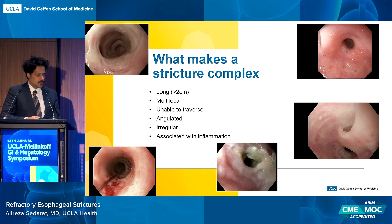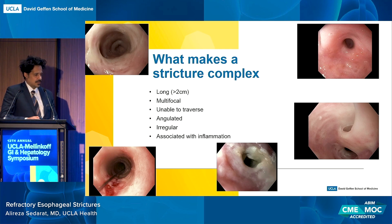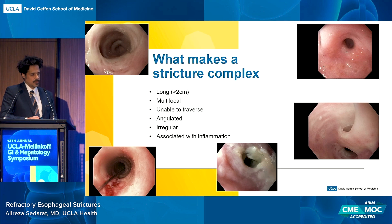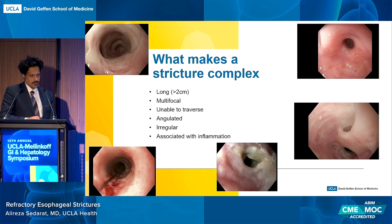What we're really talking about is complex strictures. What makes something complex? It's long as opposed to focal, multifocal as opposed to unifocal. You can't quite get through it with a standard endoscope — even if you're only able to traverse it with an ultra-slim scope, I'd consider it complex. Angulated, irregular, or associated with inflammatory changes, esophagitis. There are some gnarly-looking strictures, and I would characterize those as complex. Some of the weirdest ones have bridging webs of tissue from severe inflammation that's healed into a bridge.